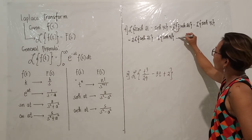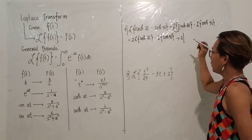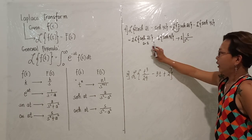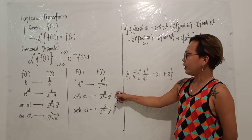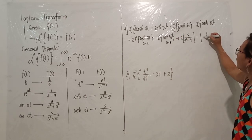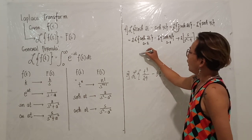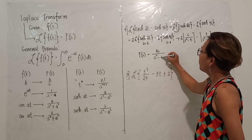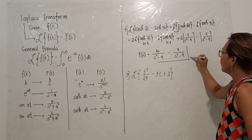In this case, we now have 2 times the Laplace transform of hyperbolic cos, which is s over s squared minus a squared, where a equals 2, giving s over s squared minus 4. Minus the Laplace transform of hyperbolic sin 3t, which is a over s squared minus a squared, where a equals 3, giving 3 over s squared minus 9. So the final answer is 2s over s squared minus 4, minus 3 over s squared minus 9.